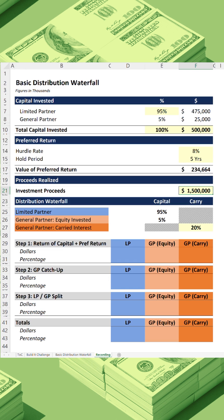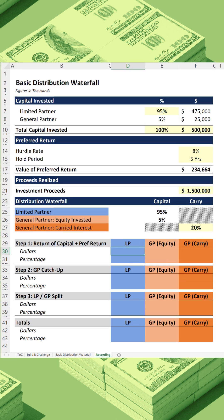The private equity partners will get a performance fee or carried interest of 20% for all their work. This 20% carried interest is why most people want to be in private equity, and we're going to find out why. So let's get started.